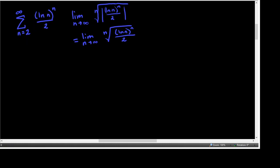I just realized something else I did. When I was copying this down, I wrote a 2 in that denominator, probably because I was thinking of n equals 2 and got myself distracted. That's not a 2. So let me go back and fix that — it should have been over n. And of course n is always positive when n is one or bigger, so that absolute value can be stripped away as superfluous.